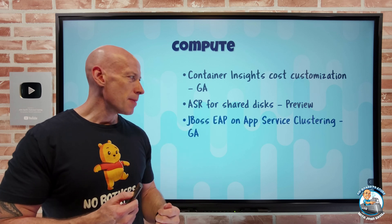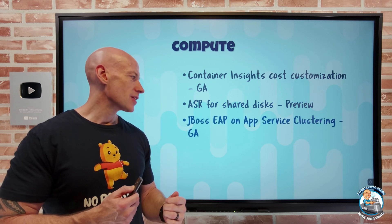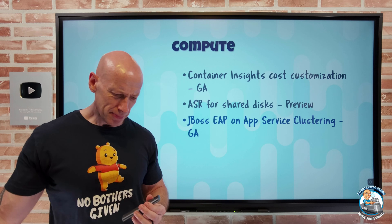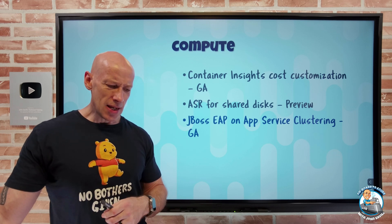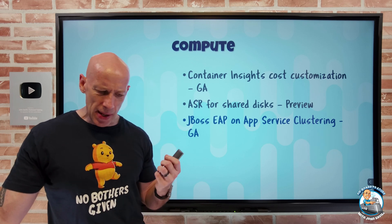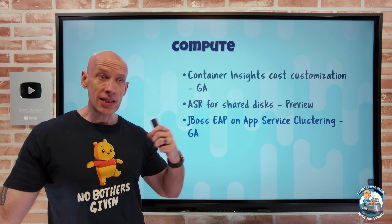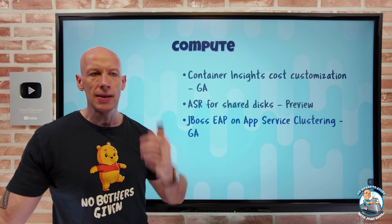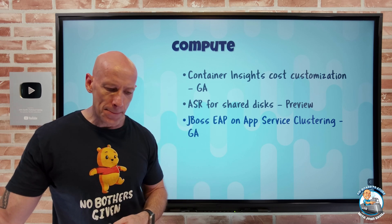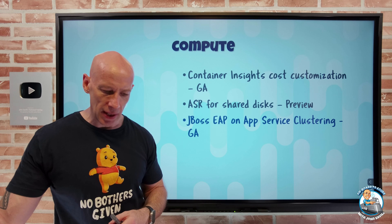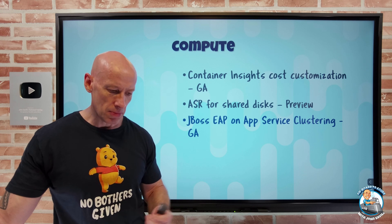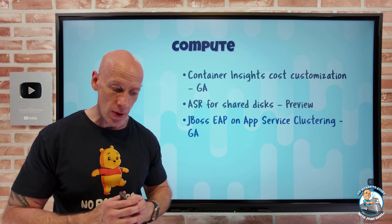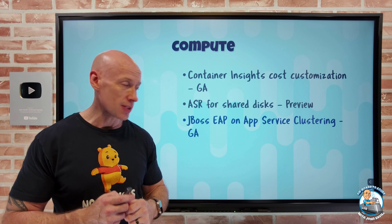And then JBoss EAP on App Service clustering is now GA. The JBoss EAP will just automatically start as a clustered service, which is going to give me better efficiency and high availability. It's also going to auto-scale as part of the App Service.